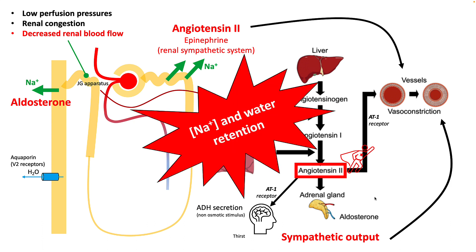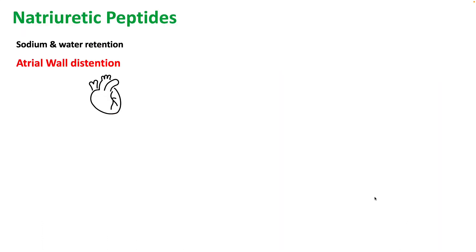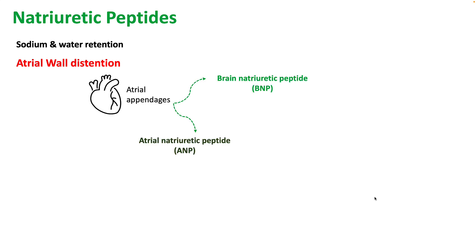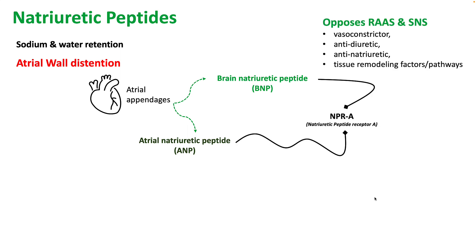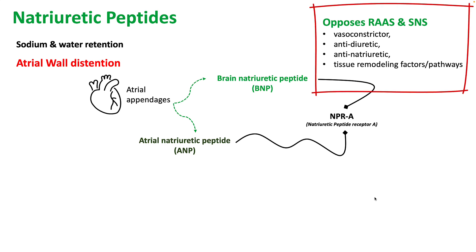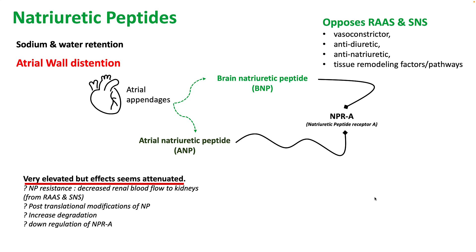With sympathetic output, vasoconstriction occurs to maintain perfusion pressures. All this results in salt and water retention, which stimulates your atria. Because of atrial wall distension, natriuretic peptides are produced, which oppose the effects of RAAS and the sympathetic nervous system. However, in heart failure these are highly elevated but their effect seems to be very attenuated, and research is ongoing to figure out why.